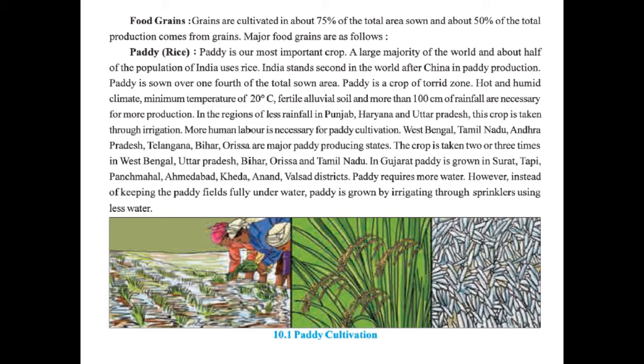The crop is taken two or three times in West Bengal, Uttar Pradesh, Bihar, Orissa, and Tamil Nadu. In Gujarat, paddy is grown in Surat, Tapi, Panchmahal, Ahmedabad, Kheda, Anand, and Valsad districts. Paddy requires more water; however, instead of keeping the paddy fields fully under water, paddy is grown by irrigating through sprinklers using less water. Rice is one of the chief grains of India and the country has the largest area under rice cultivation.